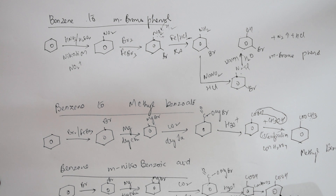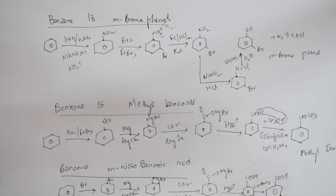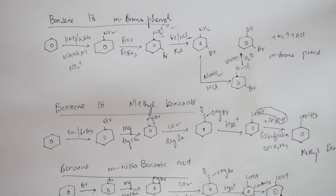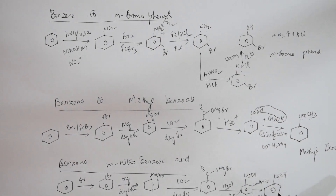To introduce NO2, we use the nitrating mixture: concentrated HNO3 and concentrated H2SO4. That completes the conversion of benzene to meta-nitrobenzoic acid.